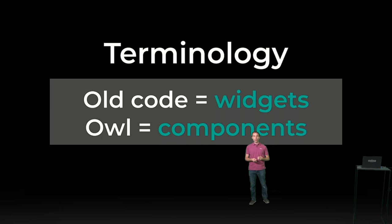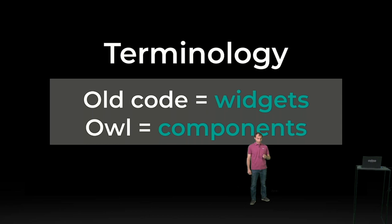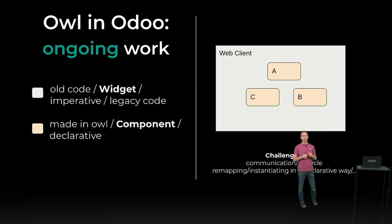This is the old imperative code, and the new future web client will be done with components. That's the word we will use. I know that widget is an overused term — it's used in other situations — but I will clarify when it's needed in this talk. So now that we have the terminology clear, let's talk about the current state of the web client in OWL.